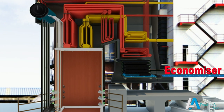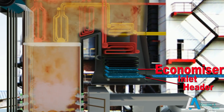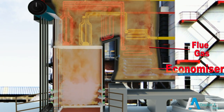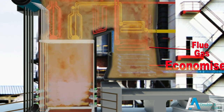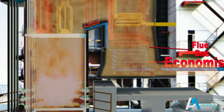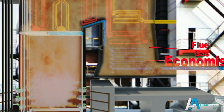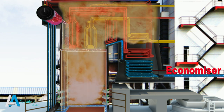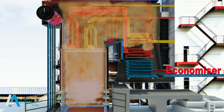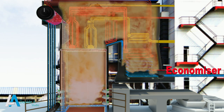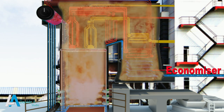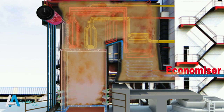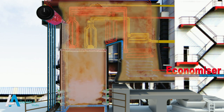Feed water enters through the inlet header and passes through the coiled path of the economizer. Hot flue gases pass across these tubes and increase the temperature of feed water inside the economizer tubes. The coiled structure of tubes increases surface area and contributes to optimum heat transfer. The heat thus gained increases the sensible heat of feed water before entering the boiler, thereby reducing fuel consumption for producing steam.